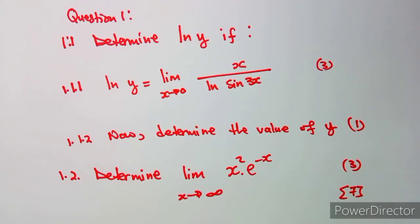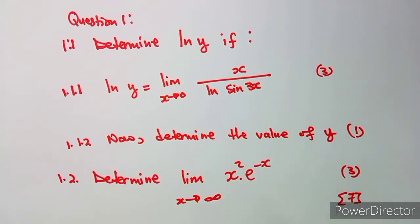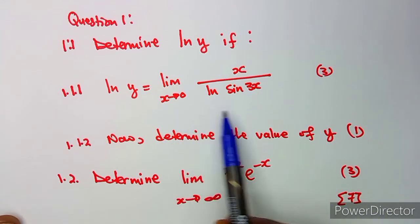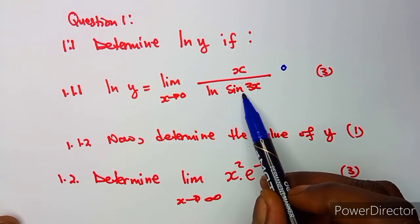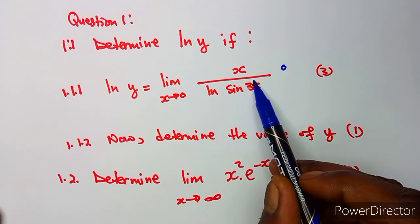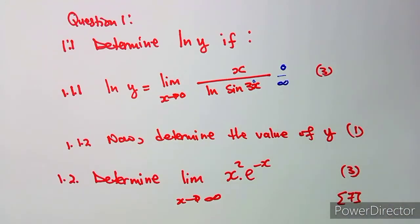We are given question one: determine ln(y) where ln(y) is equivalent to the given limit. Since it's already a fraction, all you need is to test when x equals zero. This gives us zero in the numerator, and ln(sine of three times zero) is ln(0), which is undefined — you can't simplify that. So it's something that is not exact.